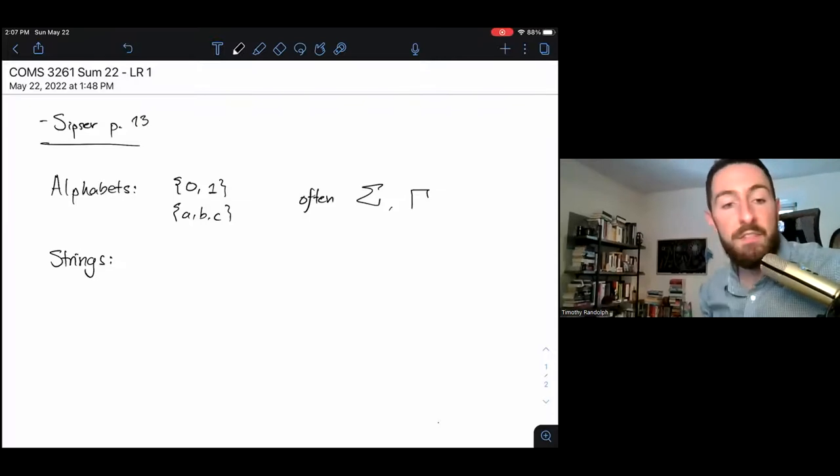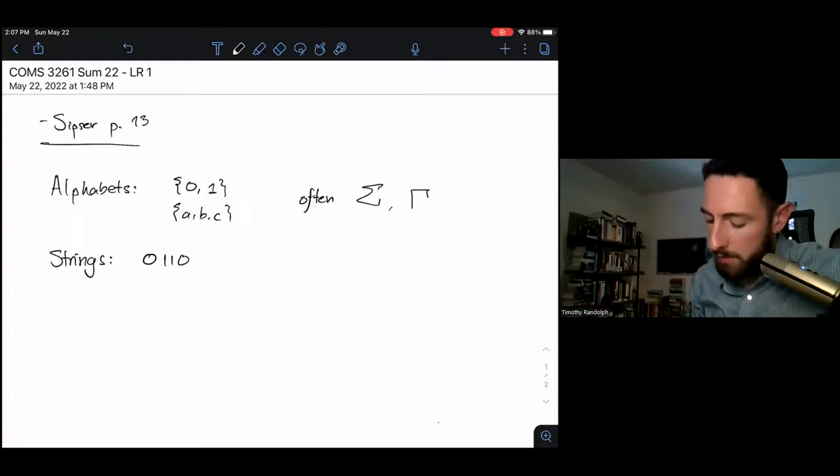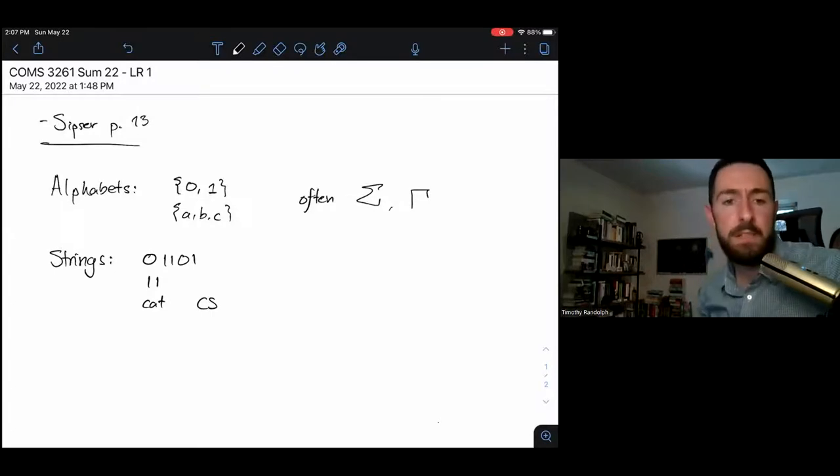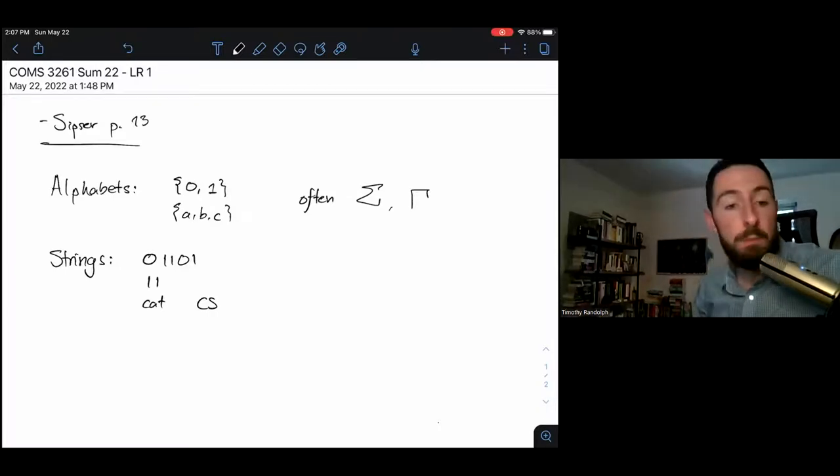Strings - a string is a finite sequence of symbols from an alphabet. So 01101, that's a string over the binary alphabet. So is 11. Cat is a string, CS is a string. These are essentially identical to the strings you've seen when you're programming. They're always going to be over some alphabet. One important thing to remember about strings is that by definition in this class, they are finite objects. They have a finite length.